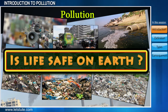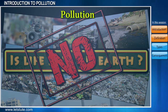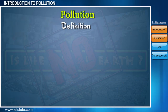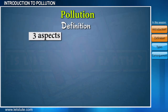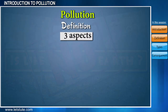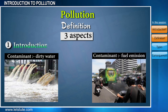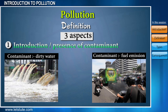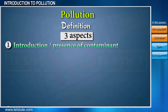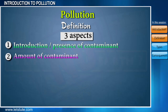Will then our environment be safe for the existence of life? No, right? So to define pollution, we need to look into three aspects. First, if the contaminant is being introduced or is present in our surroundings. Secondly, the extent to which it is present.